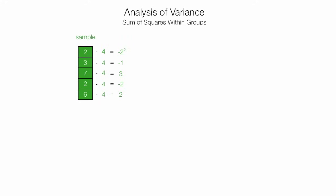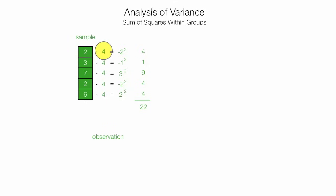Now I take negative 2 and square it, which equals 4. Negative 1 squared equals 1, 3 squared is 9, negative 2 squared is 4, and 2 squared is 4. Now I sum all these up, and the sum equals 22. So I took each observation, computed the difference between the observation and the mean, squared it, and then summed all those values — that's 22.